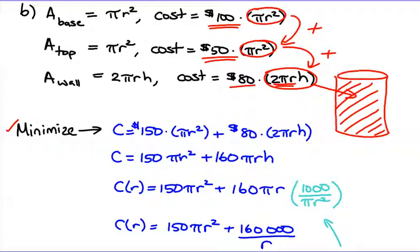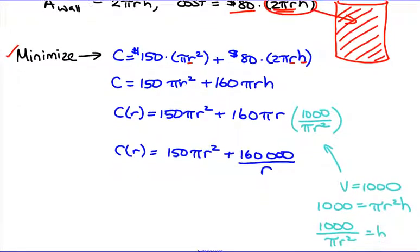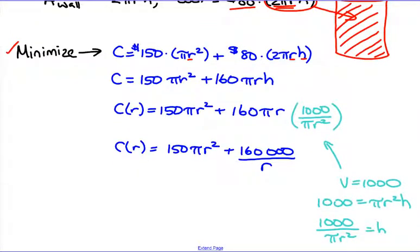We're going to minimize 150πr² plus 80·2πrh. Here's the problem: too many variables. You need to make sure that you only have one variable, and we can actually use one of the constraints. One of the constraints was that your volume was 1,000. If your volume is 1,000, you can solve by bringing all this to the other side, getting it in the denominator. Now you have an equation for h. So knock out that h and put this guy instead. Now you have everything as r's, and you can take the derivative after you simplify it a little bit.